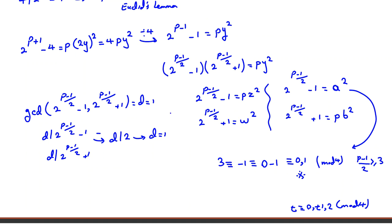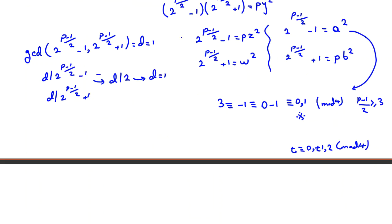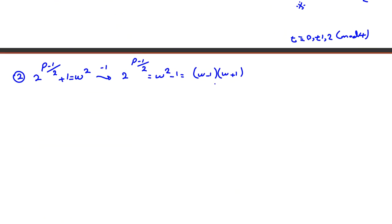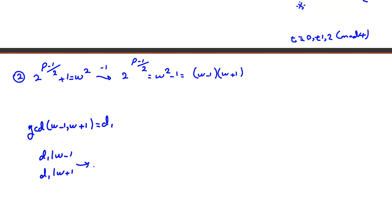Now let's consider Case 2: 2^((p-1)/2) + 1 = w². Subtracting 1 from both sides gives 2^((p-1)/2) = w² - 1 = (w - 1)(w + 1). Let d₁ = gcd(w - 1, w + 1). Then d₁ divides (w + 1) - (w - 1) = 2, so d₁ is 1 or 2.